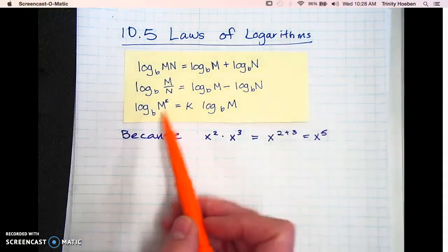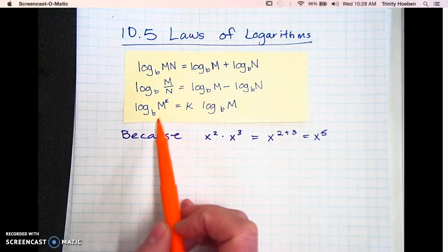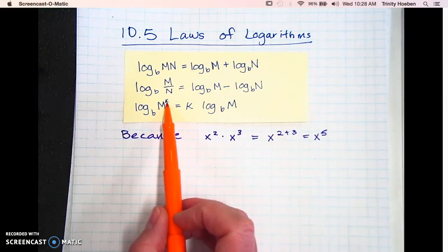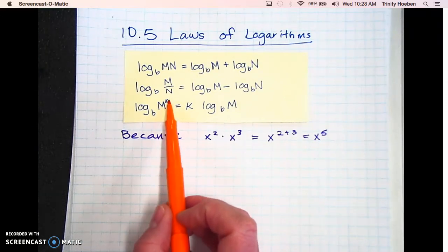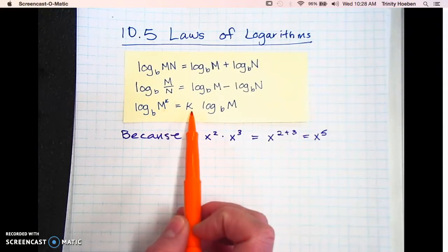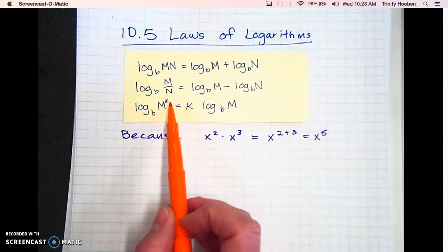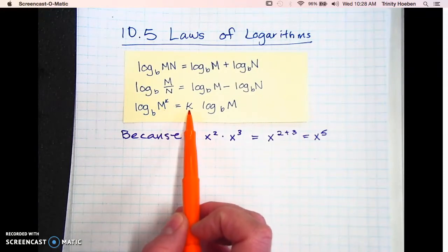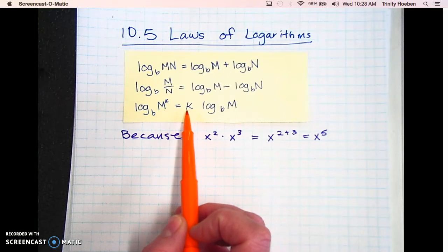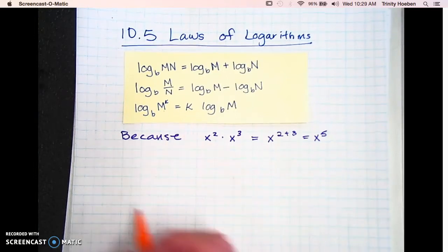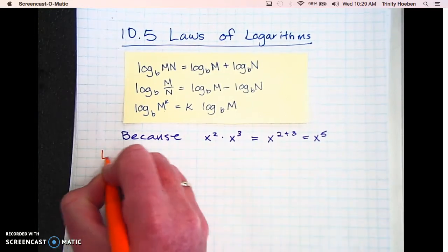The third law is basically if there's an exponent on the M, you're going to take whatever number it is — say it's a square or a cube — and just write that out front kind of like a coefficient. All right, so let's try one.